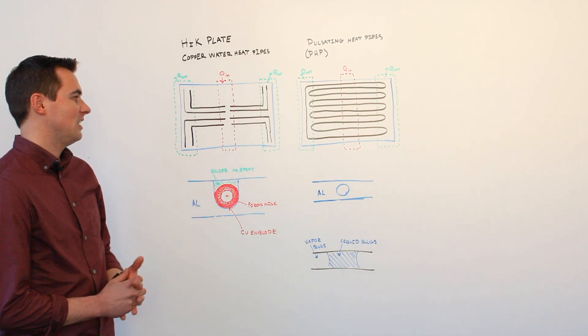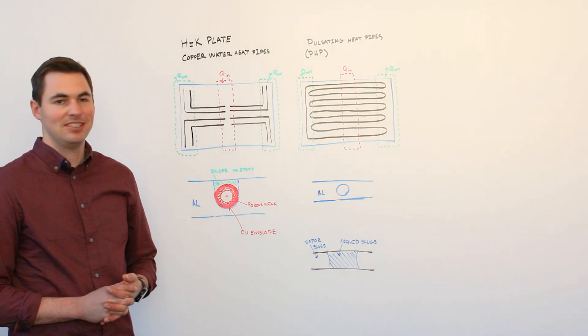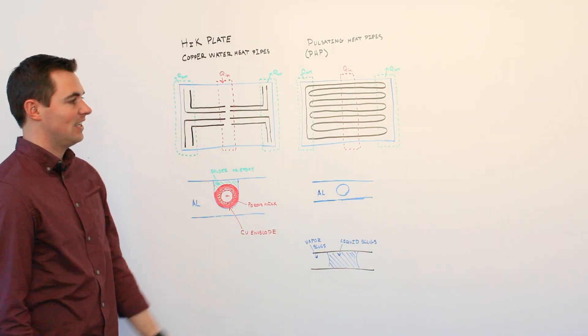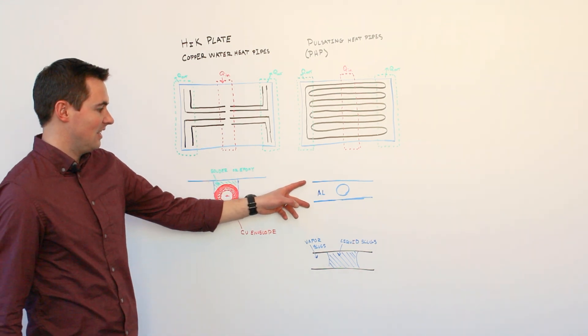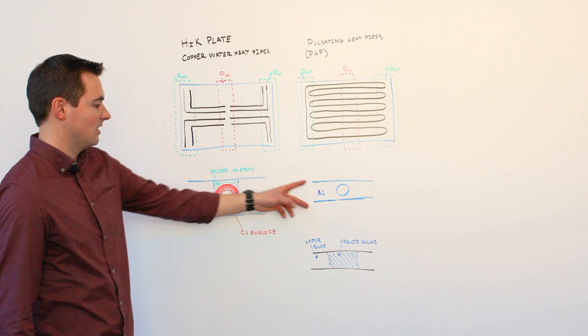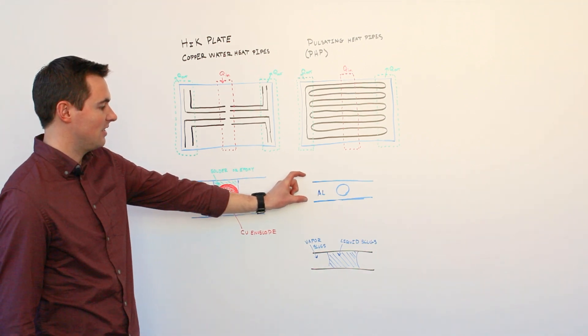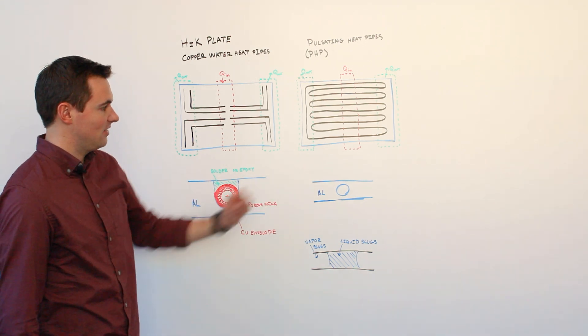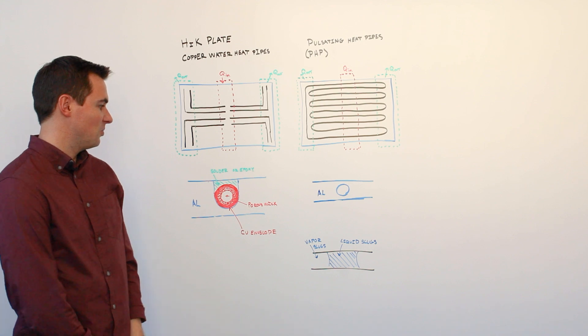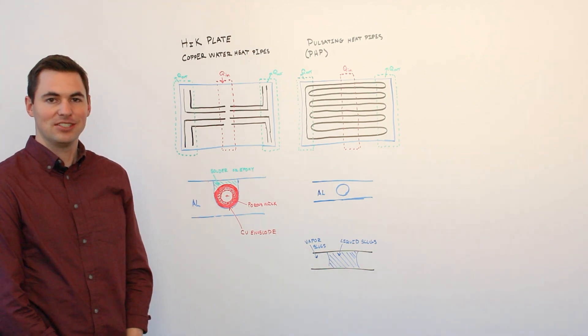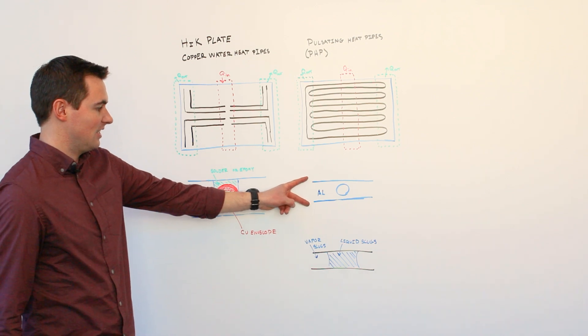If we focus on pulsating heat pipes, there are a few reasons why you may choose that technology over conventional high K plates. Pulsating heat pipes, as you can see, have a simpler configuration and thus can be made to be thinner and thus offer some options where either space constraints are present or where mass is a significant concern.